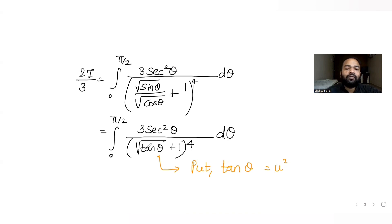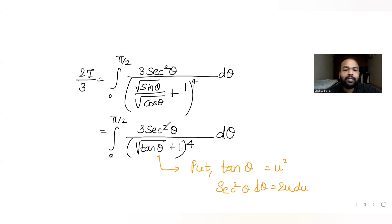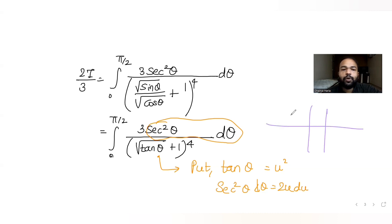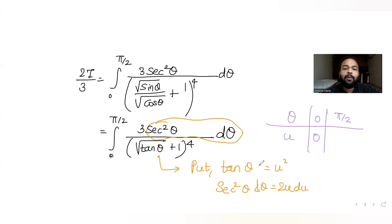With tanθ = u², the derivative gives sec²θ dθ = 2u du. The limits also change: when θ = 0, u = 0; when θ = π/2, tanθ = ∞ so u → ∞. So u goes from zero to infinity.